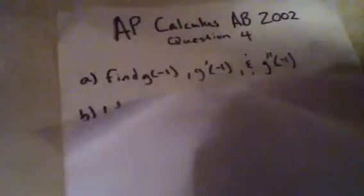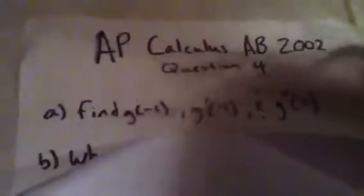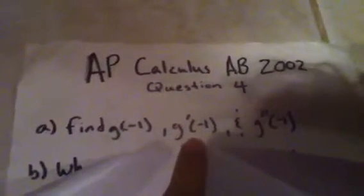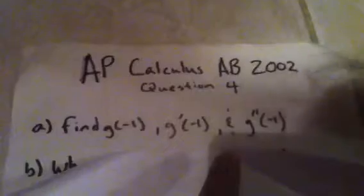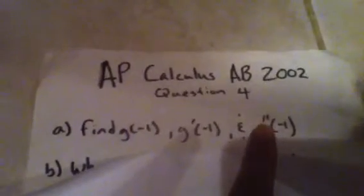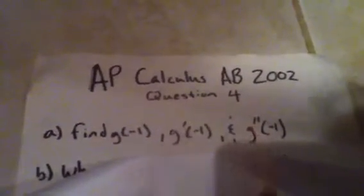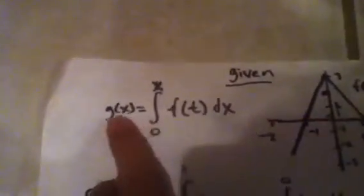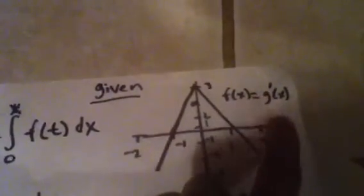So let's start with the first question. Find g(-1), g'(-1), and g''(-1). Let's see what we are given. We're given this function and here's a graph of the function, which is f(x), which is the same as g'(x).